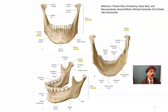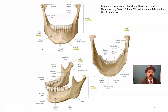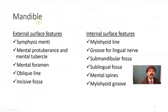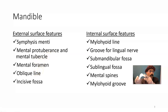The digastric fossa is present. We have the sublingual fossa and the submandibular fossa. This is the mylohyoid line on the inner side of the body of the mandible — the origin of the mylohyoid muscle. The oblique line is on the outside. The mental foramen is for the exit of the mental nerve and vessels. On the external surface we have the symphysis menti, mental protuberance, mental tubercle, mental foramen, and oblique line. The incisive fossa lies below the central incisive teeth.